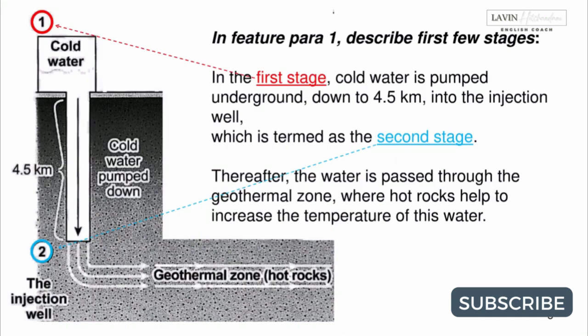In Feature para 1, describe the first few stages. In the first stage, cold water is pumped underground down to 4.5 km into the injection well, which is termed as the second stage. Thereafter, the water is passed through the geothermal zone, where hot rocks help to increase the temperature of this water.